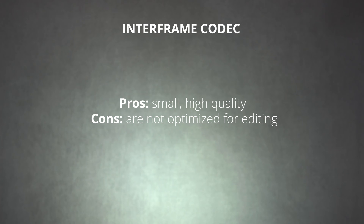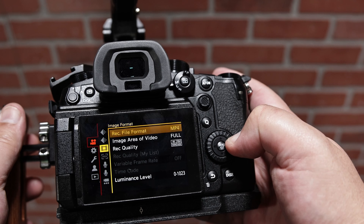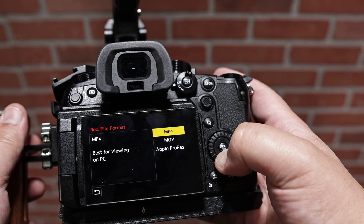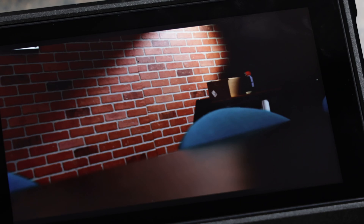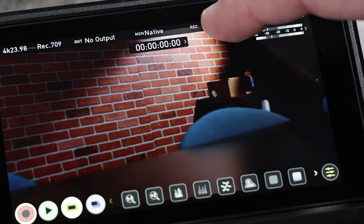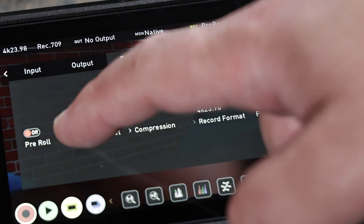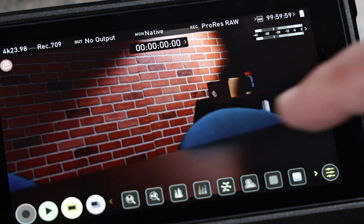Now that we know a bit more about codecs, we can take a more informed look at the files we get from our cameras. You might think that using the media that comes directly out of your camera would always be the best option, but this is not always the case. Many cameras today record in H.264, though some are now moving to H.265. Both are good for producing small file sizes without losing much quality, but these interframe codecs can drag down your system's performance. Professional level cameras sometimes have the option to choose intraframe codecs such as Apple ProRes or DNxHD, and those pro-level intraframe codecs will be better suited to editing.